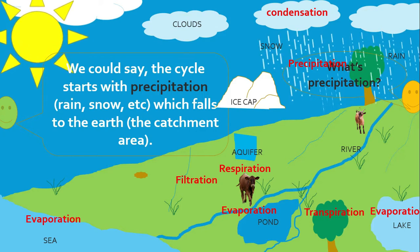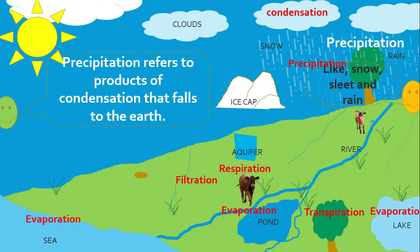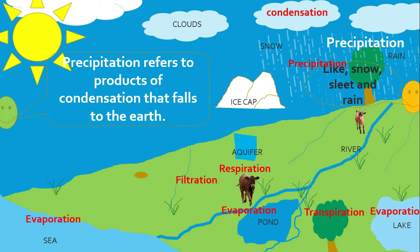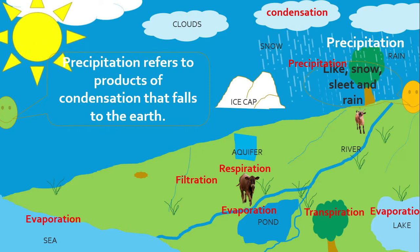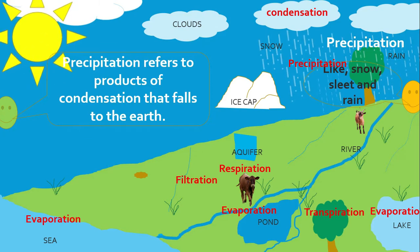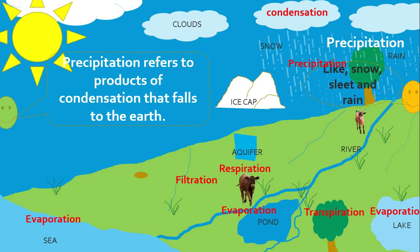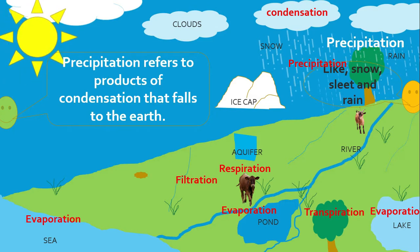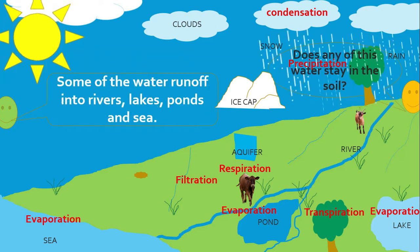What's precipitation? Precipitation is the product of condensation that falls to the Earth — like snow, sleet, and rain. That's correct.